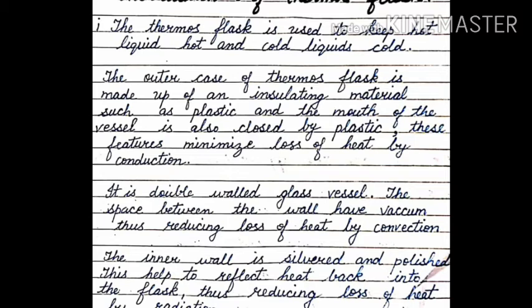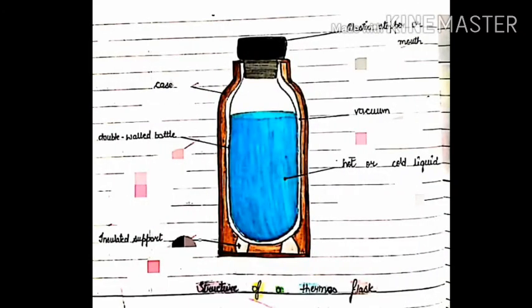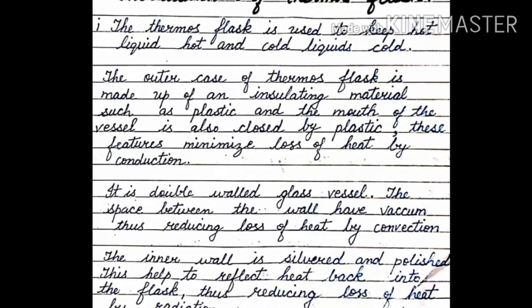Convection takes place in gases and liquids, but in the case of the thermos flask there is no air, no medium between the two walls — the space between the two walls has vacuum. So this feature reduces loss of heat by convection. The inner wall is also silvered and polished.